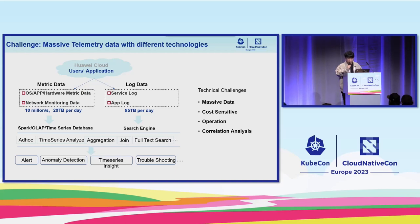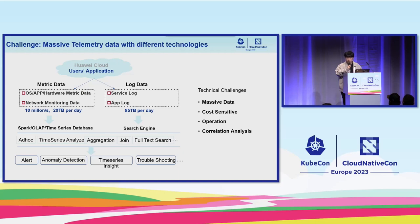When we want to do correlation analysis, such as joining the same trace ID across logs and traces, it is necessary to pull data out of the data engines and compute it separately. The cost of data transformation is expensive and inefficient. So we want to explore a simpler data stack and unify storage engine to process all of this data.